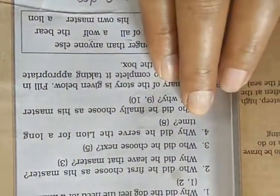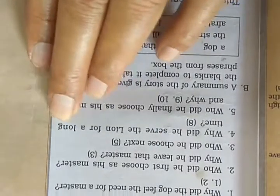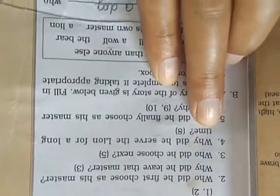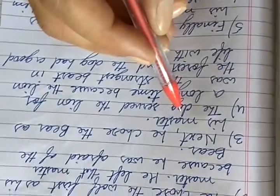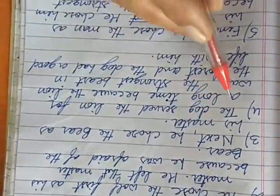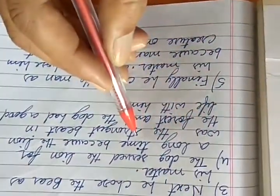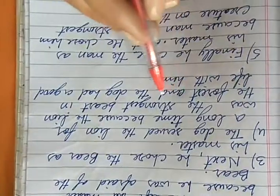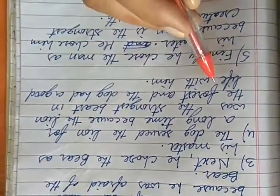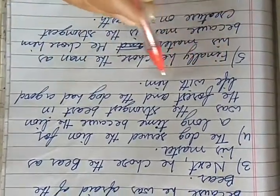Question number 4. Why did he serve the lion for a long time? Answer to this question will be, the dog served the lion for a long time because the lion was the strongest beast in the forest and the dog had a good life with him.